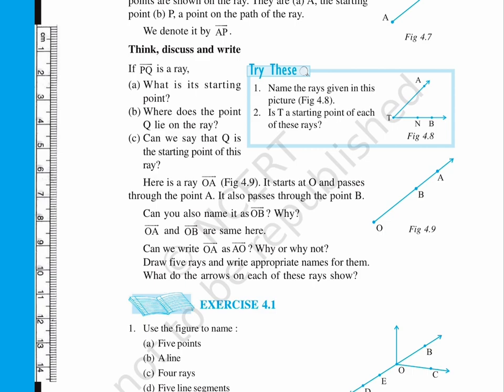Here is a ray OA, figure 4.9. It starts at O and passes through the point A. It also passes through the point B. Can you also name it as OB? Why?